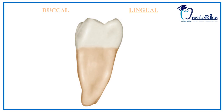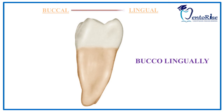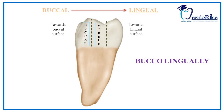In the same manner, if we divide the tooth buccolingually: first, 'bucco' implies buccal surface, and buccal surface is used in context with premolars and molars. Second, buccolingually implies that you have to start from the buccal surface and move towards the lingual surface as you are dividing the tooth. Therefore, as shown in the figure, divide the crown into three equal parts. The one third near to the buccal surface is called the buccal third, the one third in the middle is called the middle third, and the one third near the lingual surface is called the lingual third.